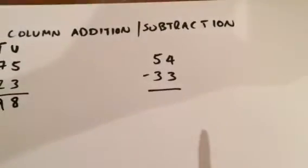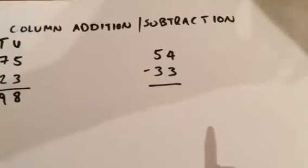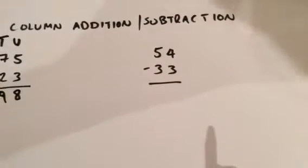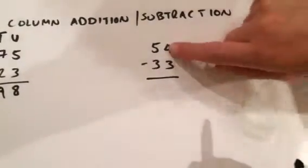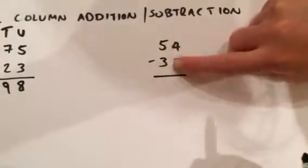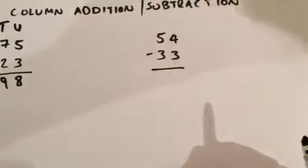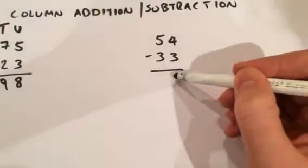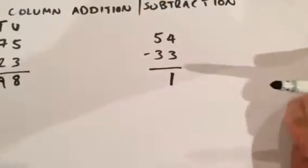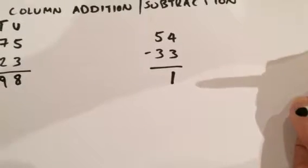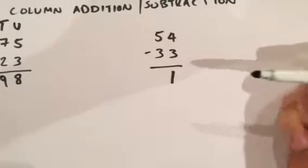But with subtraction, what do you do there? With subtraction, you've got to take 3 away from 4 and that gives you 1, because if you add 3 and 1, that'll equal 4.